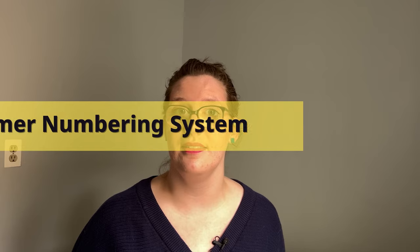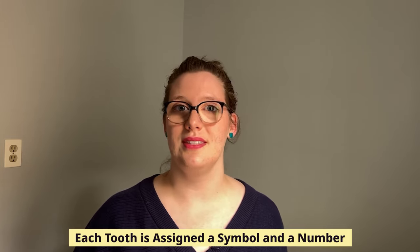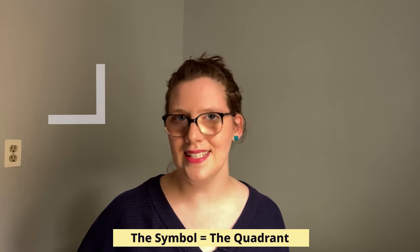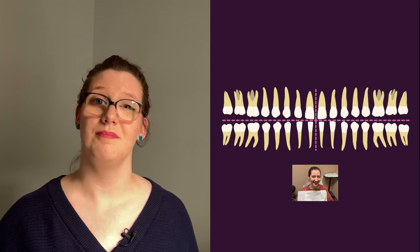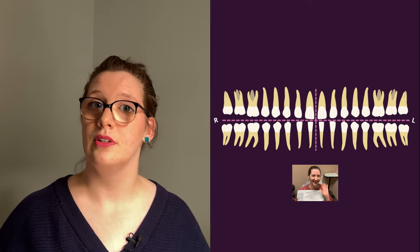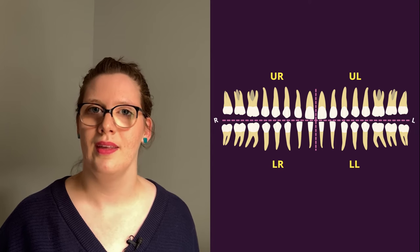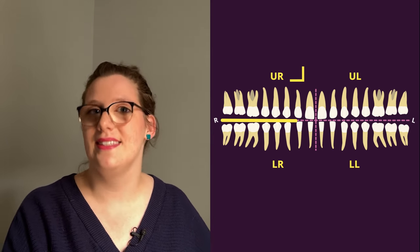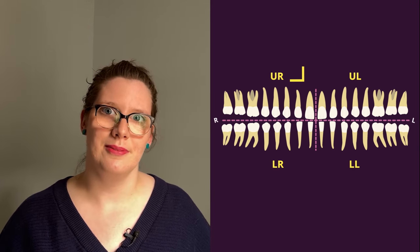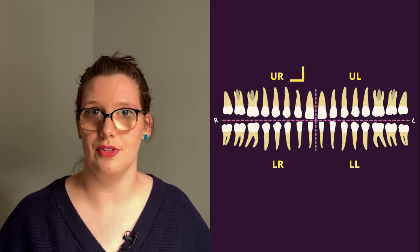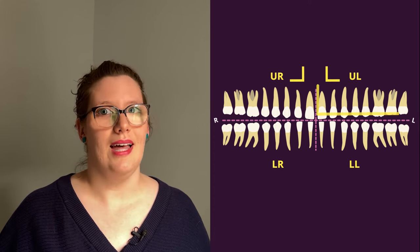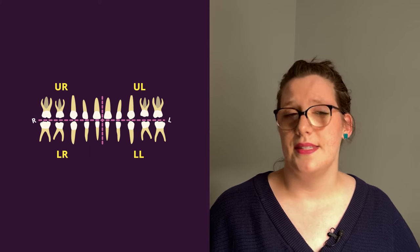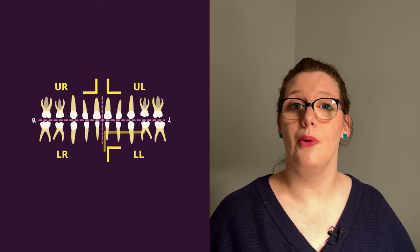The last numbering system we're going to go over is the Palmer Notation System. In this system, each tooth is assigned first a symbol and then a number. The symbol is a right angle pointing in a different direction to indicate which quadrant that tooth is in. For the permanent teeth, with the patient facing you, the upper right quadrant is assigned a symbol that matches the angle formed by a line dividing the teeth into maxillary and mandibular and into left and right — so it's an easy way to remember what each symbol should look like. Upper right has this symbol, upper left has this symbol, lower left has this symbol, and lower right has this symbol. It's the same symbols for the primary teeth as well.